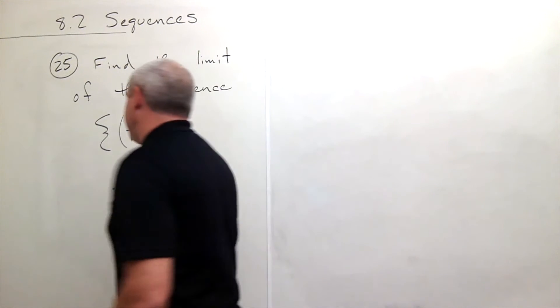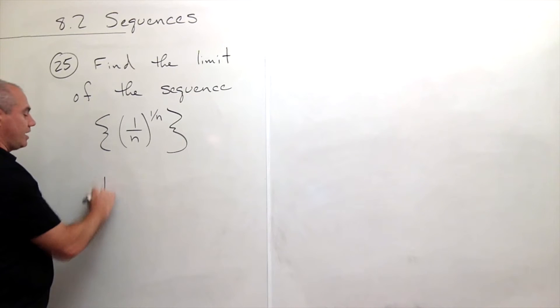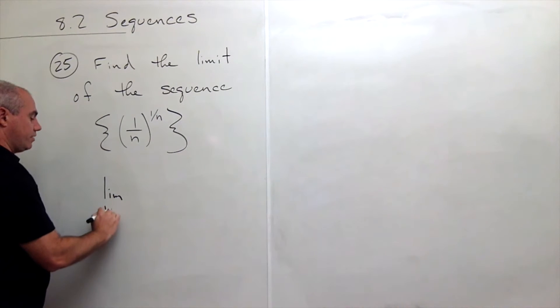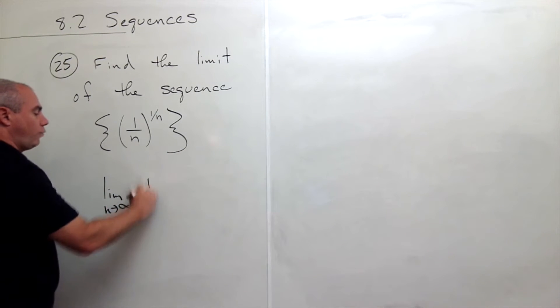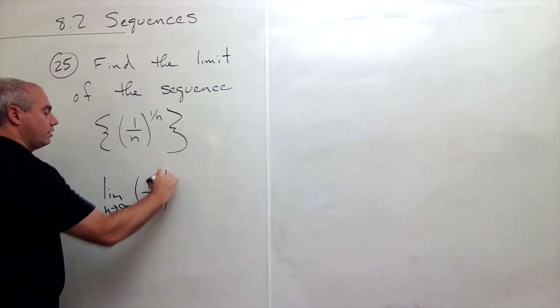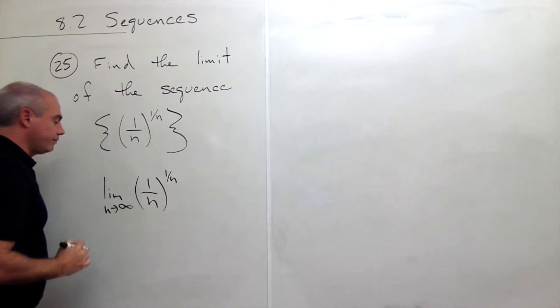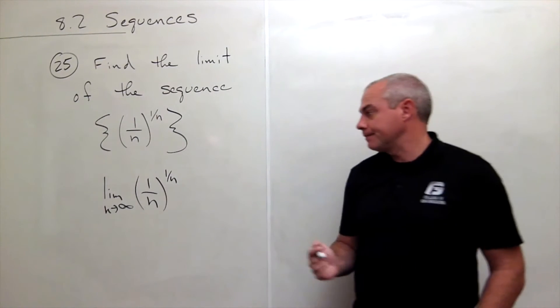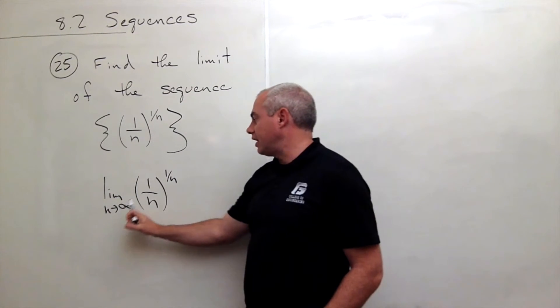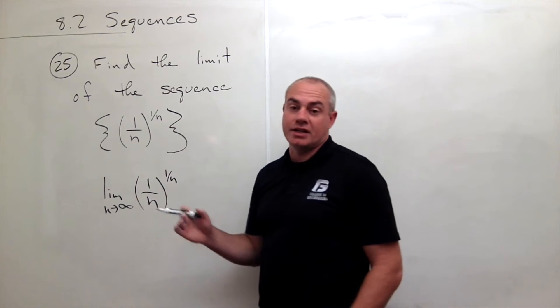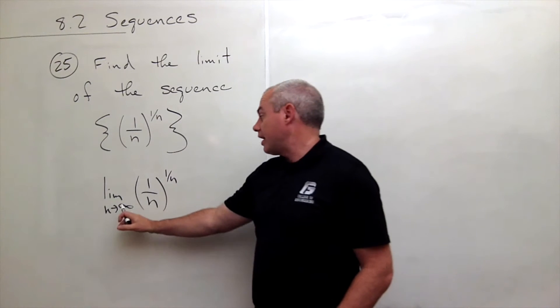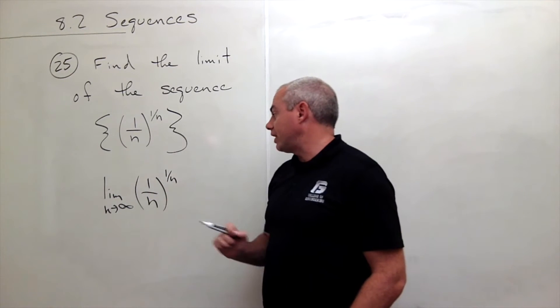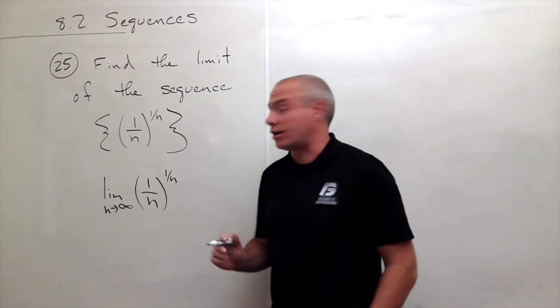If I set up the limit of this sequence, I'm taking the limit as n goes to infinity of 1 over n raised to the power 1 over n. Now, if I look at the form of this, when I plug in infinity, 1 over infinity is like 0 and 1 over infinity is like 0.